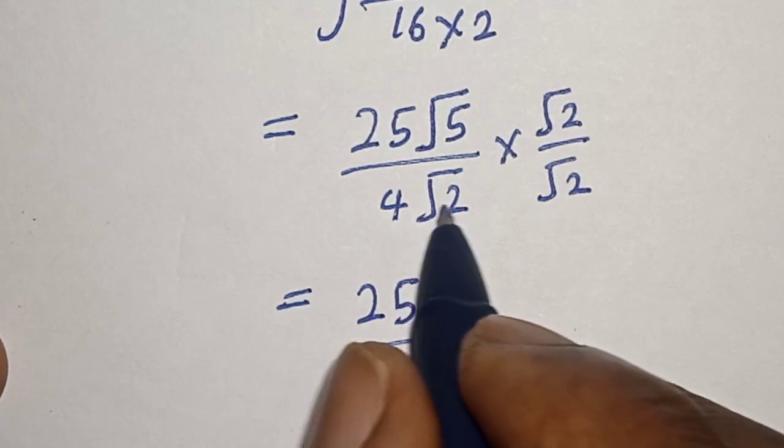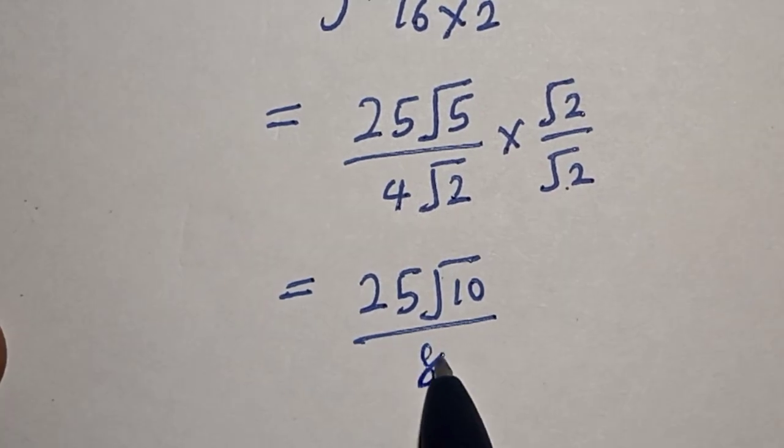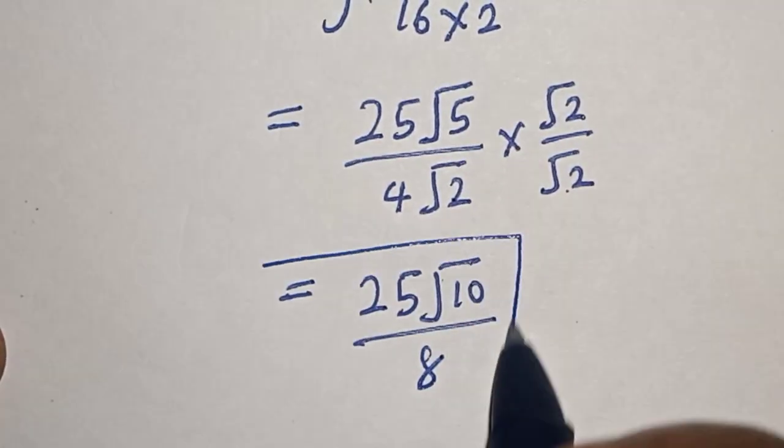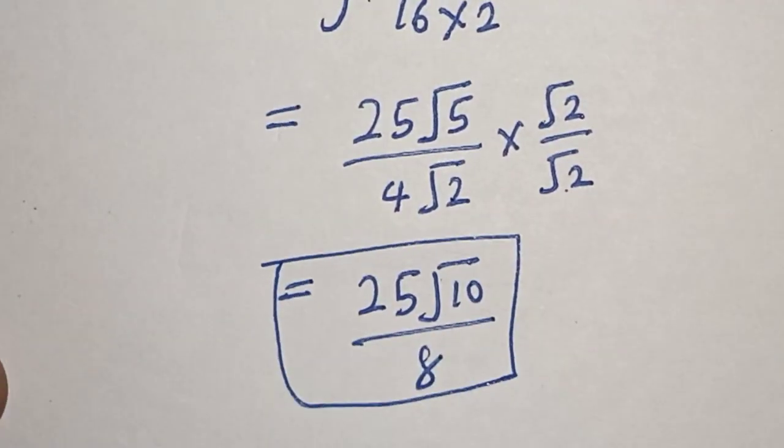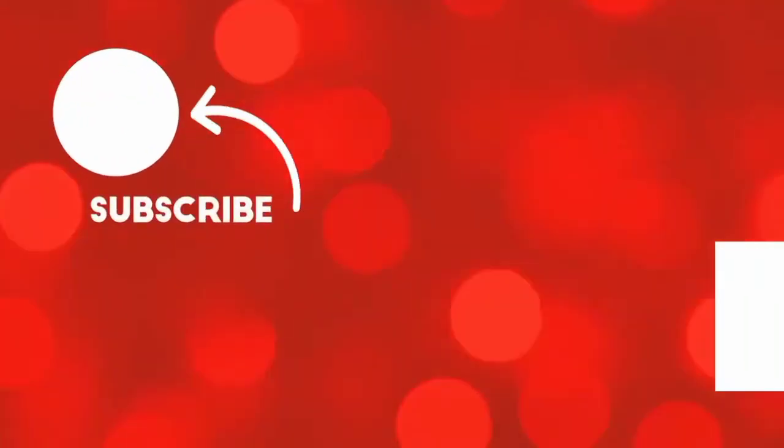The denominator is 2 times 4, which equals 8. So our final answer is 25√10/8. Before you leave, like, share, comment, and subscribe.